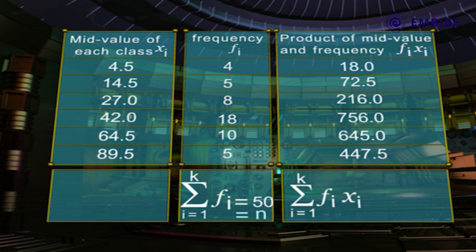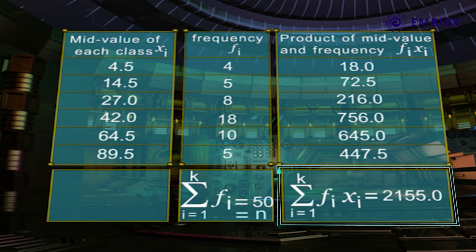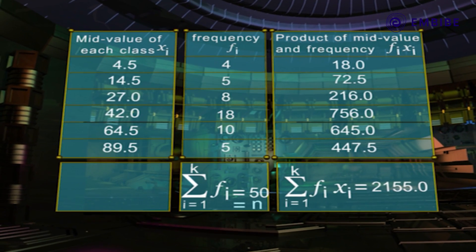Sigma fᵢxᵢ, i is equal to 1 to k, is equal to 2155.0.